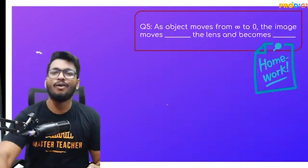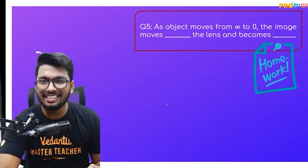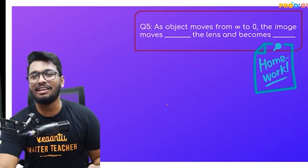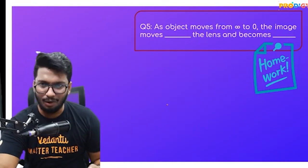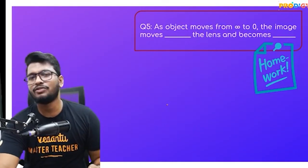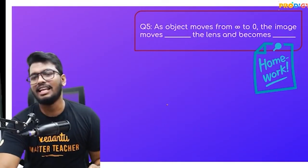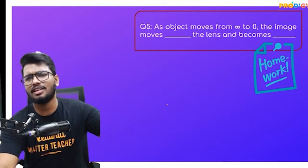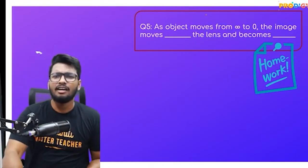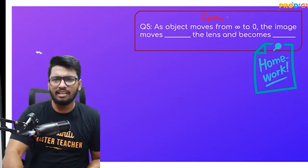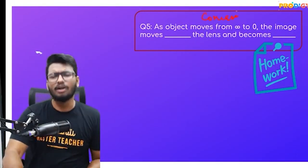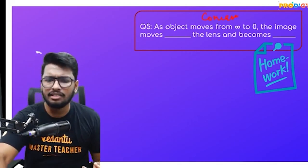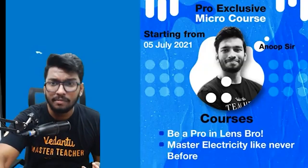Here's your homework question: As the object moves from infinity to the optical center of a concave lens, the image moves — blank — the lens and becomes — blank. Let me know the answer in the comment section.